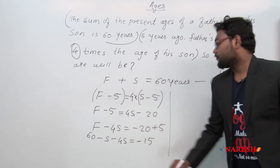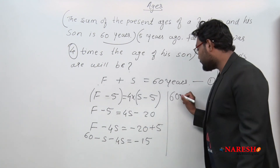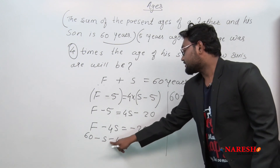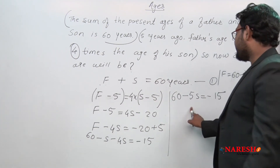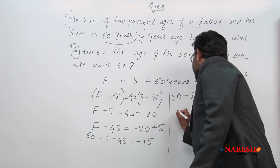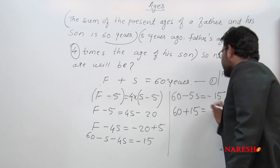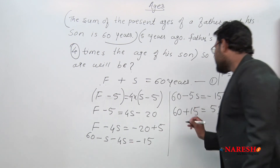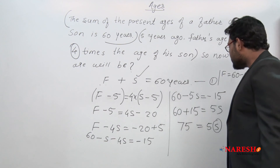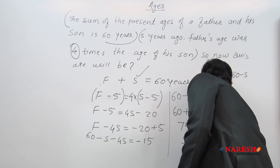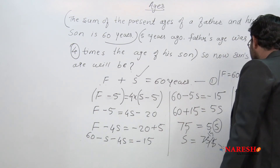Simplifying: 60 minus 5S equals minus 15. Moving 60 to the other side: 5S equals 60 plus 15, which is 75. So S equals 75 divided by 5, which is 15. Therefore, the present age of the son is 15 years.